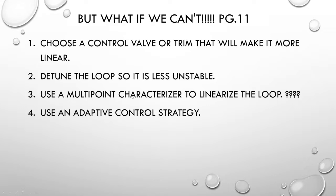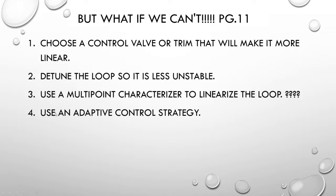The third option is to use something called a multipoint characterizer to linearize the loop. A characterizer is a method of plotting the response as it sits, then programming the controller to output a different value relative to our location in the range in order to linearize or straighten the line. Finally, the most complicated method is using an adaptive control strategy, which applies different tuning values at different points in the operating range based on calculations.